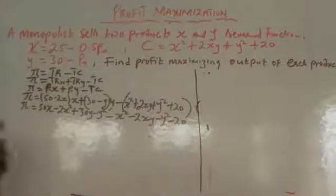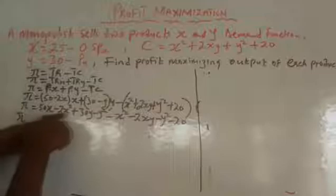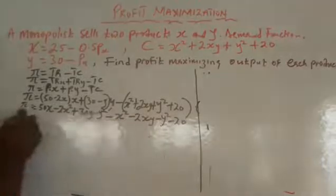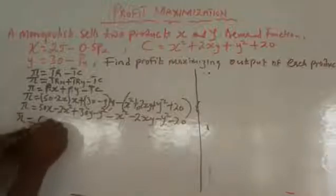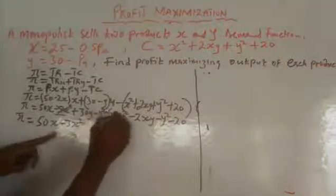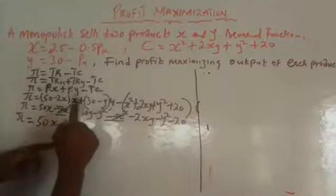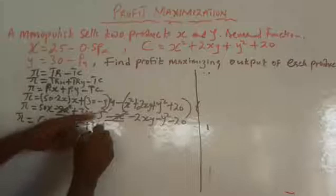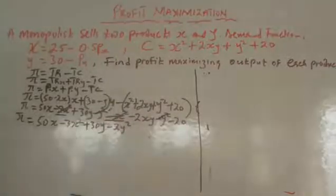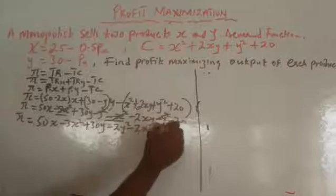Having expanded the brackets, I now rearrange and collect like terms. For the X terms: 50X stays. For X squared: minus 2X squared minus X squared gives minus 3X squared. For the Y terms: 30Y stays. For Y squared: minus Y squared minus Y squared gives minus 2Y squared. Then we also have minus 2XY and minus 20. So the simplified profit function is: π = 50X minus 3X squared plus 30Y minus 2Y squared minus 2XY minus 20.